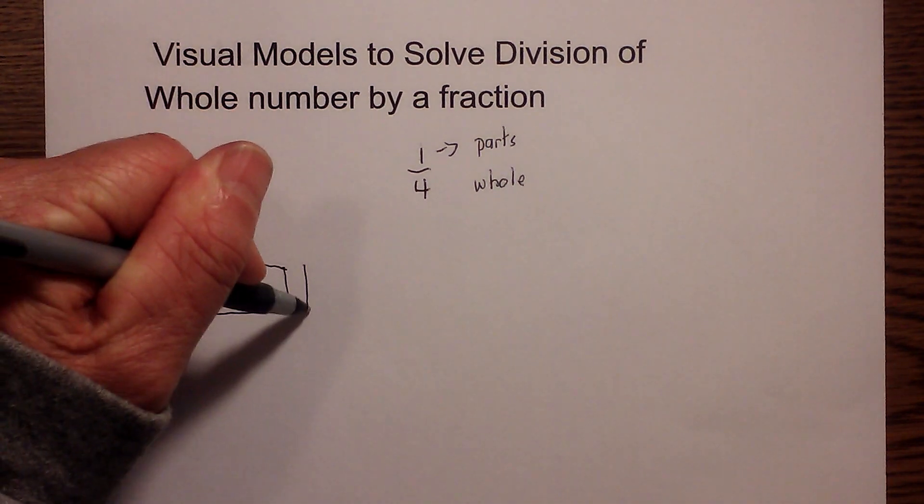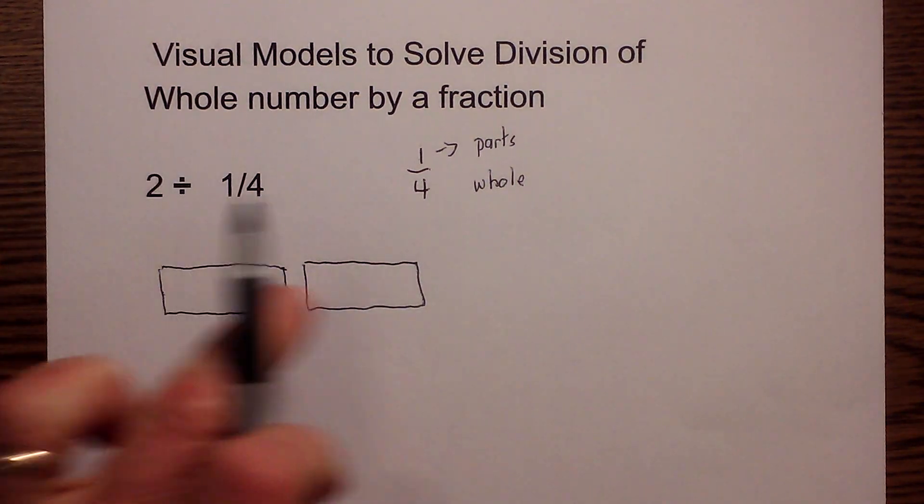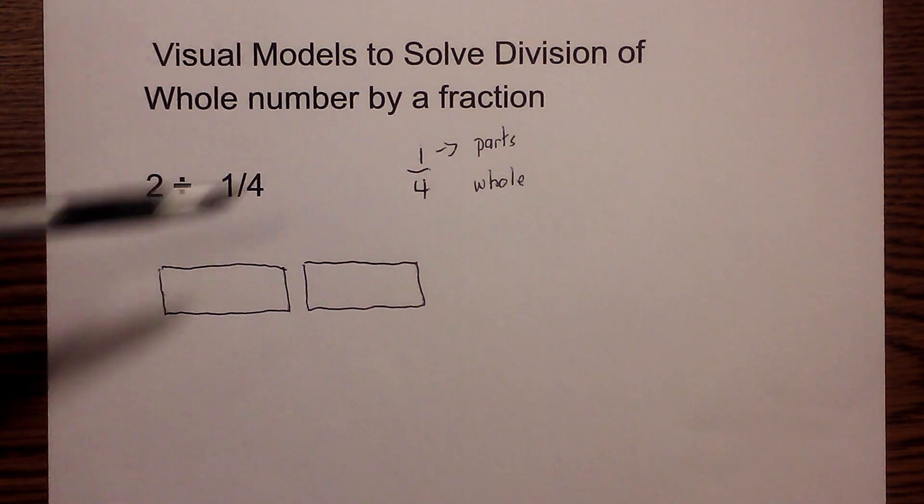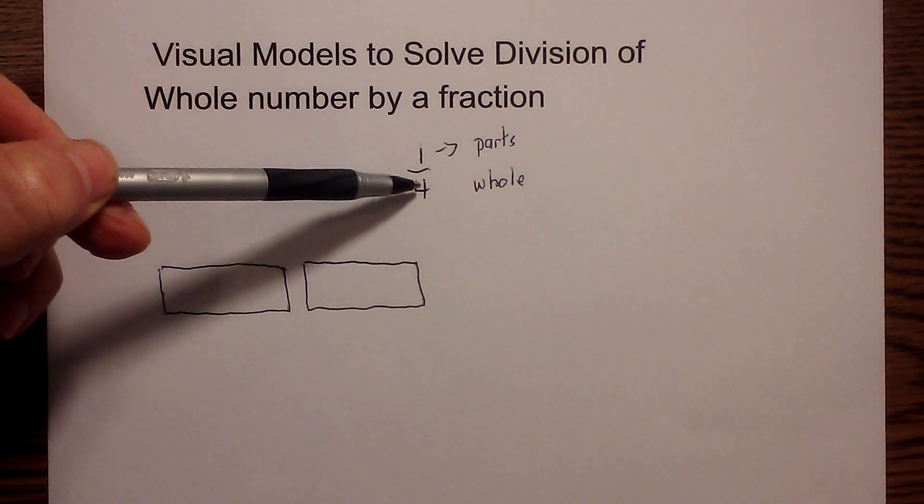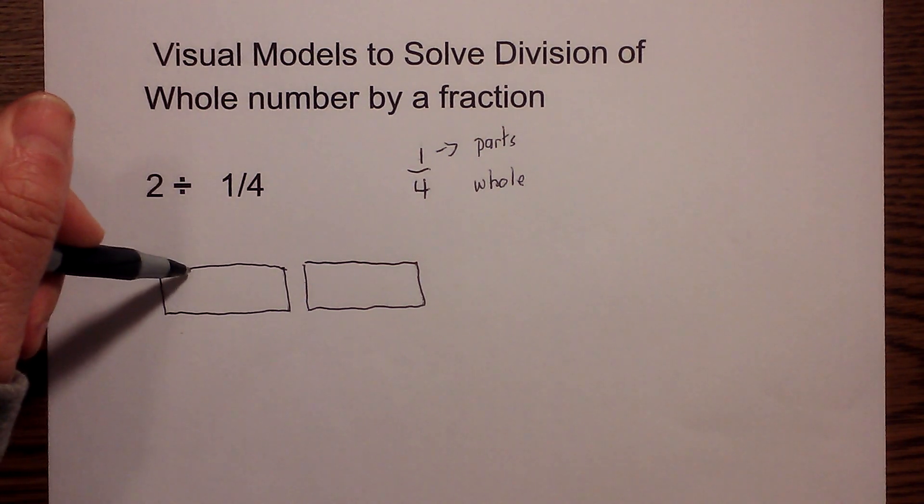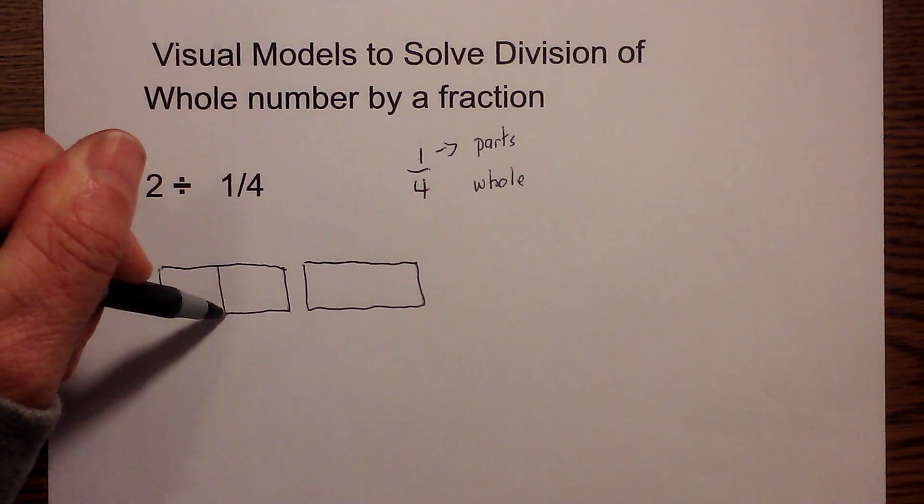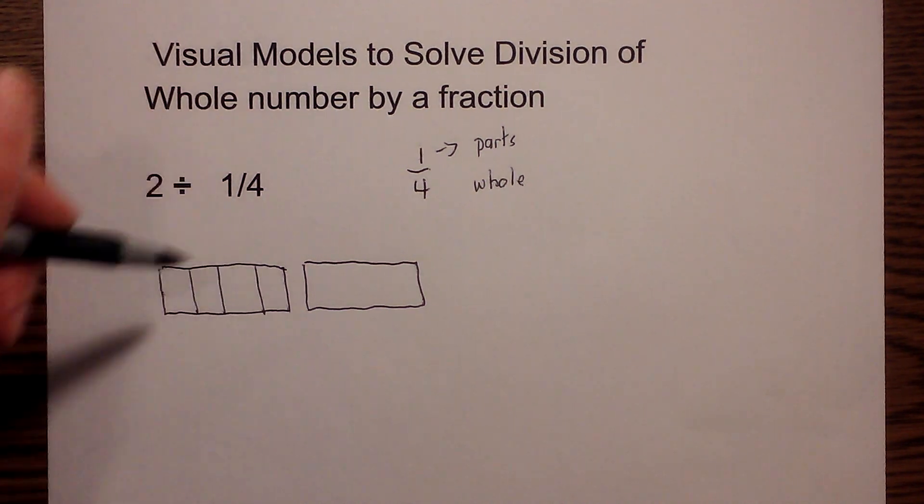I have two wholes, or two blocks. The fraction tells me I have one part of this block that has been divided into four parts. I'm going to divide this into four parts.